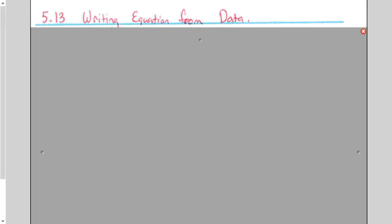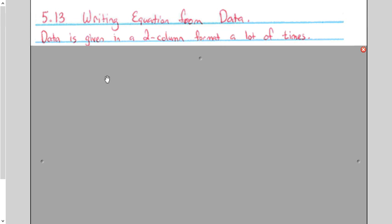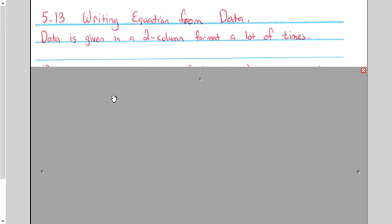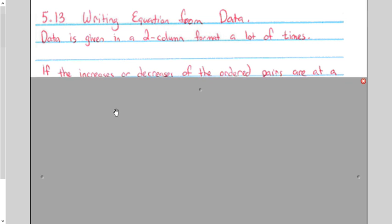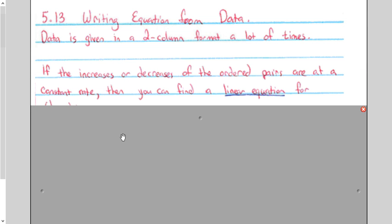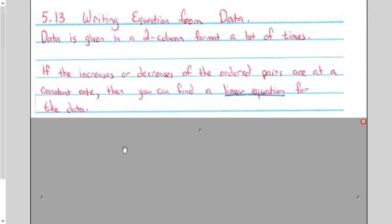Section 5.13, Write an Equation from Data. If you're familiar with how to get an equation from a table, an XY table, then this will almost be the same thing. We don't have to worry about graphing it, but that's coming up in the next section. Data is given in a two-column format a lot of times. If the increases or decreases of those ordered pairs are at a constant rate, then you can find a linear equation for the data.